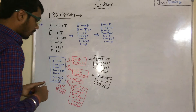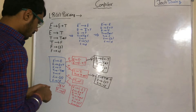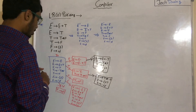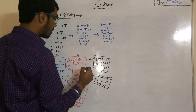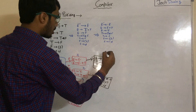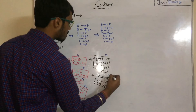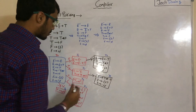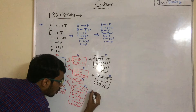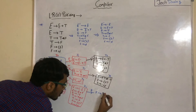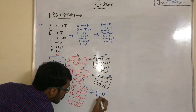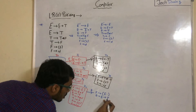Now we have to name all these states. Name them I0, I1, I2, I3, I4, I5, I6, and I7. Now apply GOTO moves on I4 — with E we get F to (E·) and E to E·plus T.